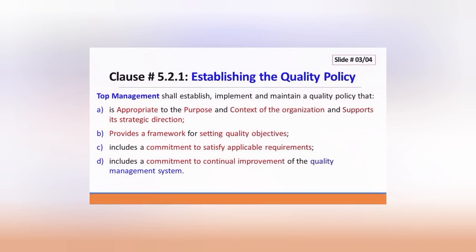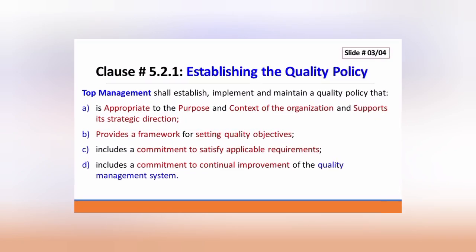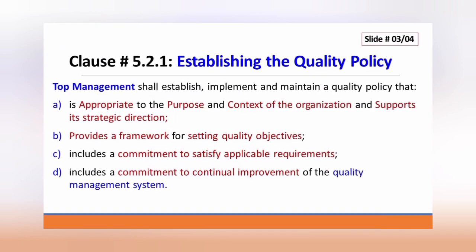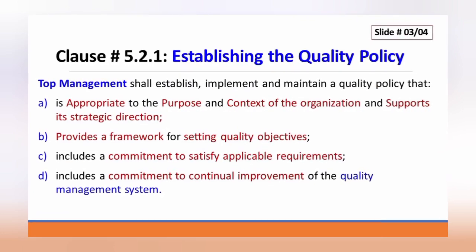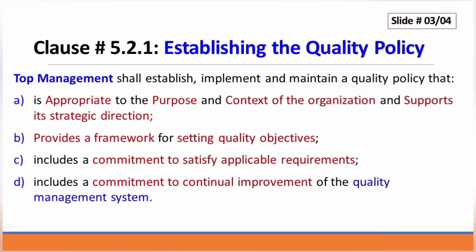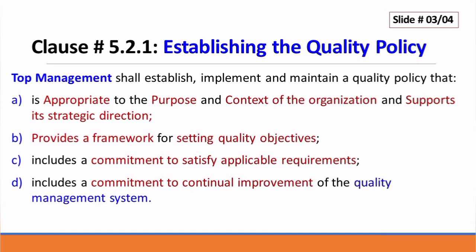Now we read, interpret, and understand clause 5.2.1 Establishing the Quality Policy. Top management shall establish, implement, and maintain a quality policy that: point A is appropriate to the purpose and context of the organization and supports its strategic direction; point B provides a framework for setting quality objectives; and includes a commitment to satisfy applicable requirements.